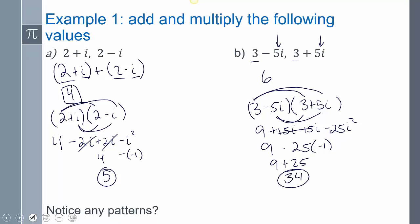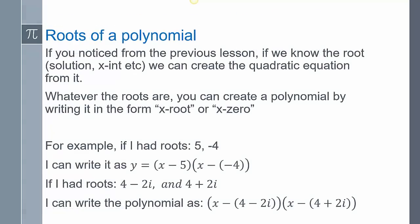Now if we noticed, there should be a pattern that you're looking at. The i's kind of disappeared when we added them and multiplied. The reason why that happened is because of the relationship of these two values. Notice how this value is the same, this value is the same. The difference is one's plus, one's minus. We call these conjugates. Conjugates are going to have this relationship when we add and multiply to where the i's are going to disappear.